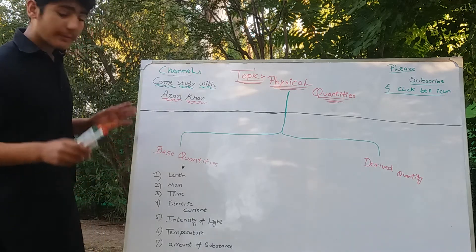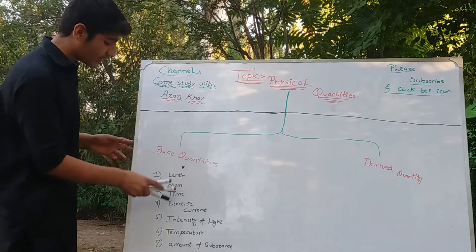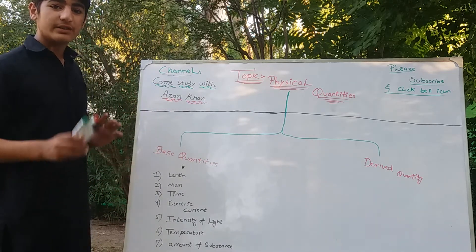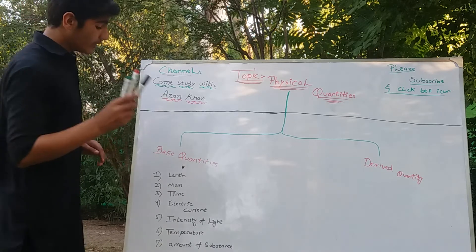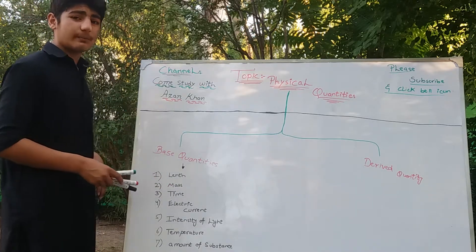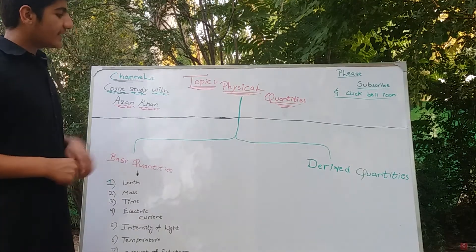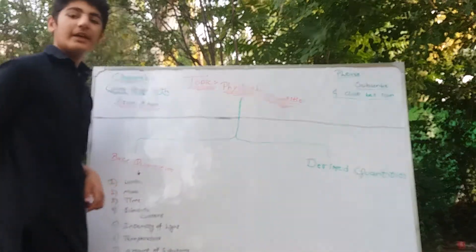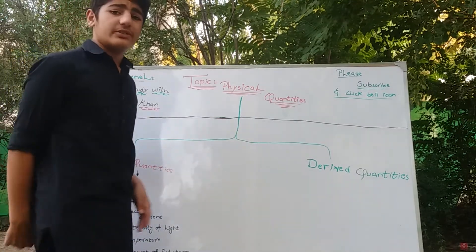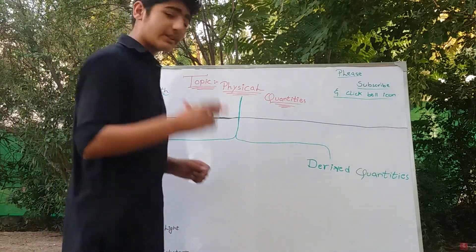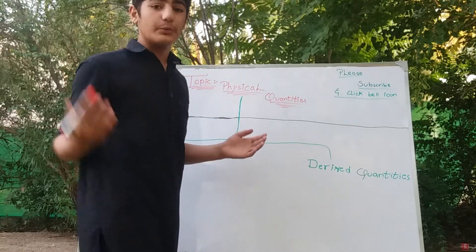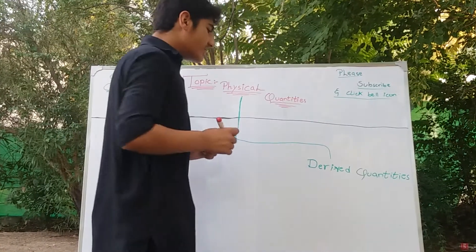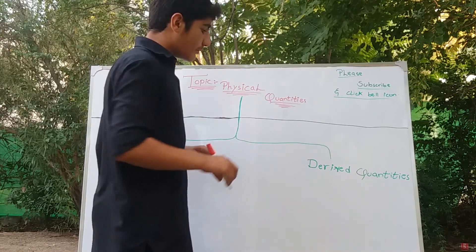These base quantities, derived quantities, and physical quantities are very, very important — you definitely have to remember them. The other part of physical quantities is derived quantities. Derived quantities are also measurable — remember that all parts of physical quantities will definitely be measurable.